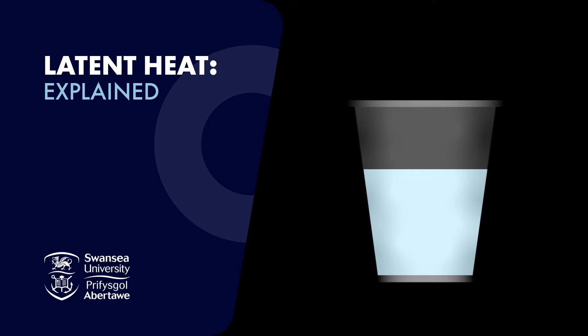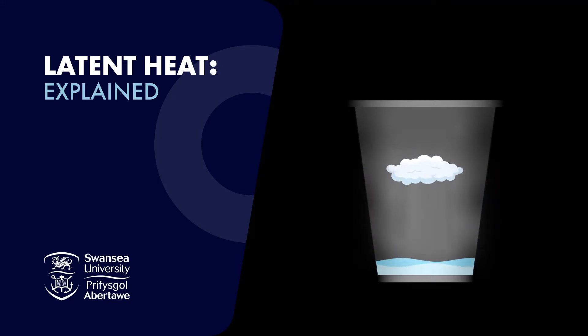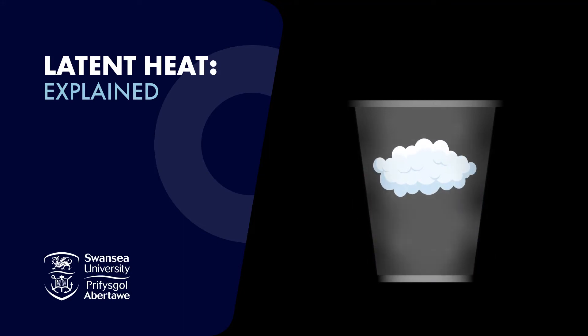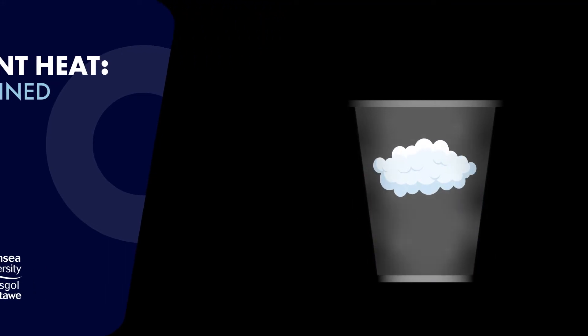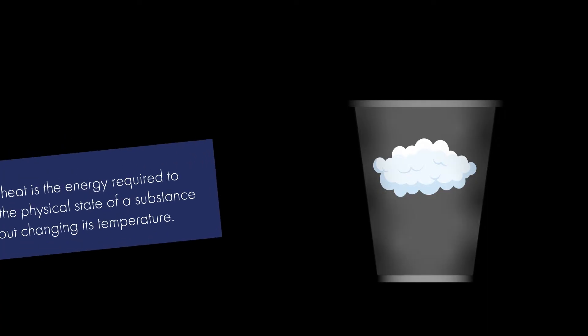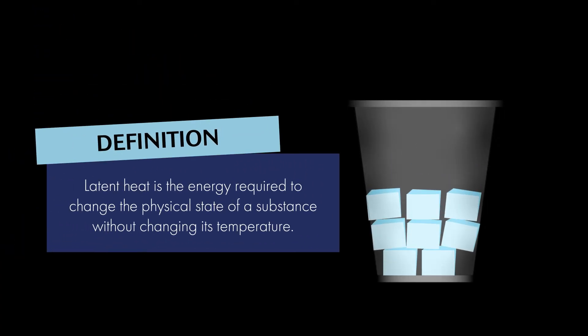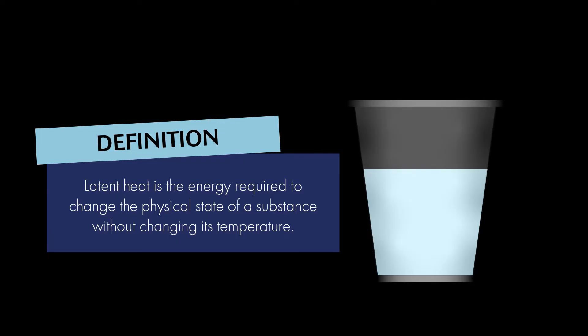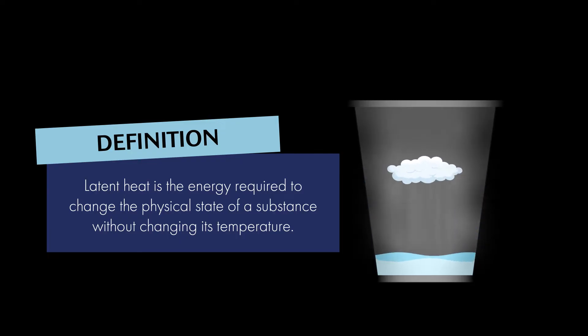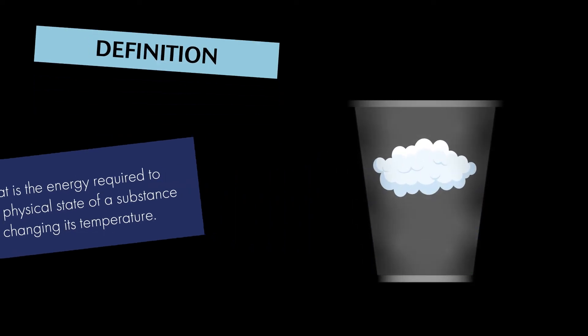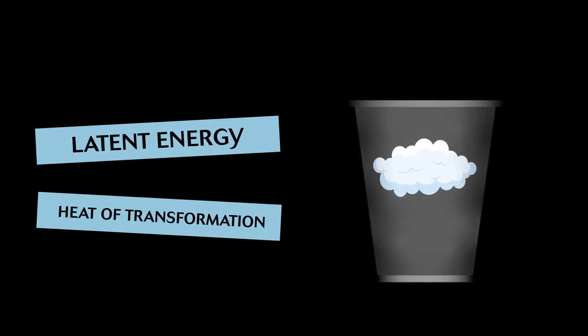Latent heat explained. Latent heat is the energy required to change the physical state of a substance without changing its temperature. It is also known as latent energy or heat of transformation.